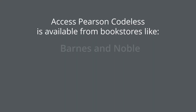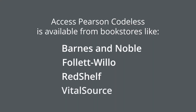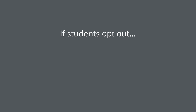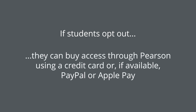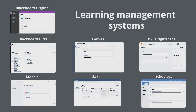Your institution may offer students the option to opt in to add the cost of MyLab or Mastering course materials to their tuition or fees. This is available from bookstores like Barnes and Noble, Follett, RedShelf, or VitalSource through the Access Pearson Codeless integration. If students opt out, they can buy access through Pearson using a credit card or, if available, PayPal or Apple Pay. Select the bookstore link in your LMS to enable Access Pearson Codeless before students register. The link is sometimes named Course Materials and may include the bookstore name. Not sure how to find the bookstore link? Contact your bookstore or LMS administrator.